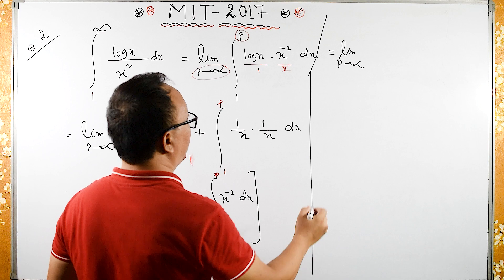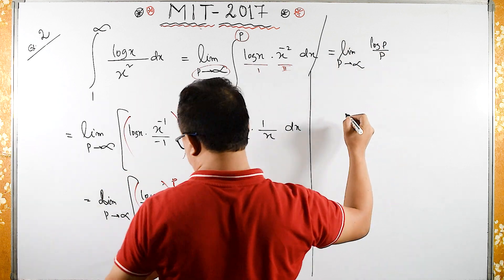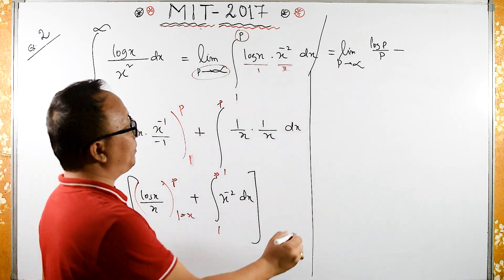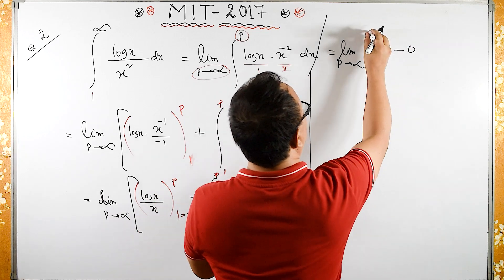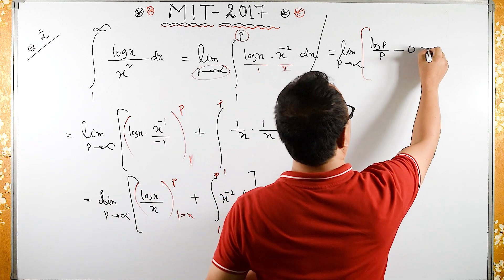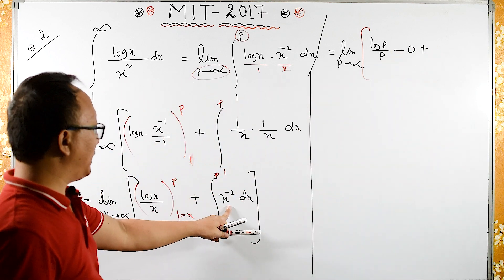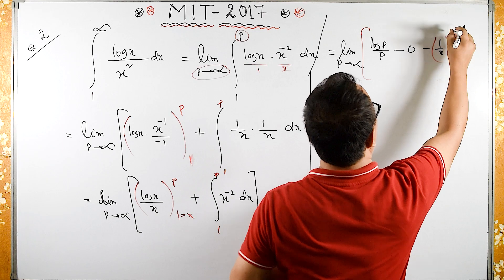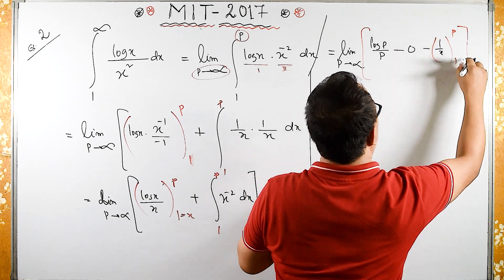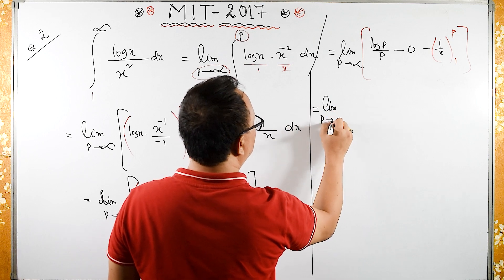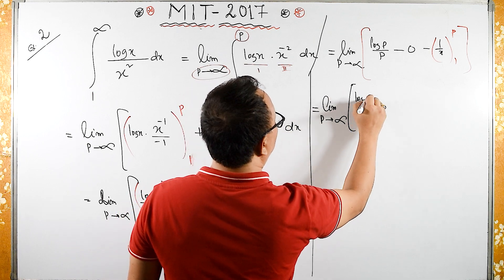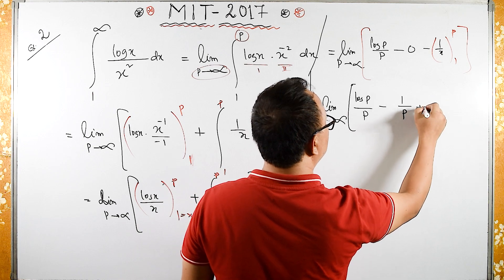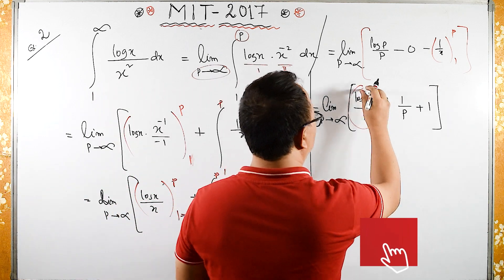Substituting the upper limit minus the lower limit: at the upper limit we get log(p)/p, and at the lower limit log(1)/1 = 0, so that term vanishes. Then the integral of x⁻² gives minus 1/x evaluated from 1 to p, giving minus 1/p plus 1.